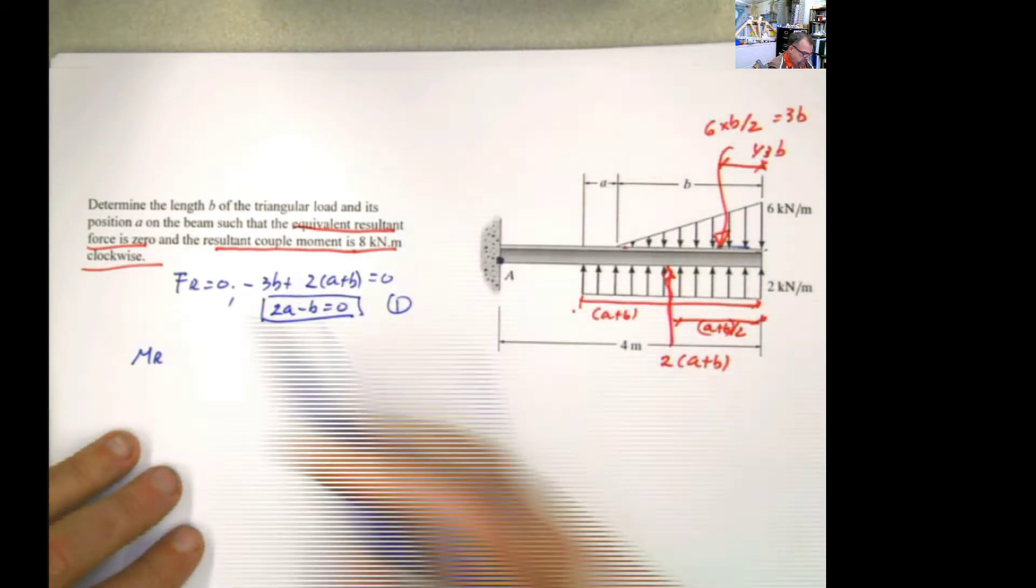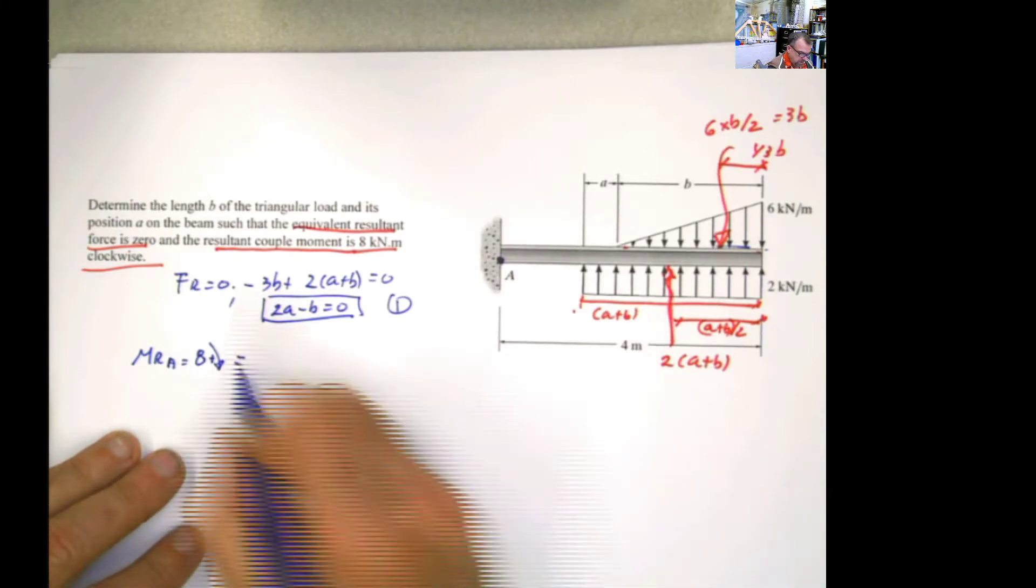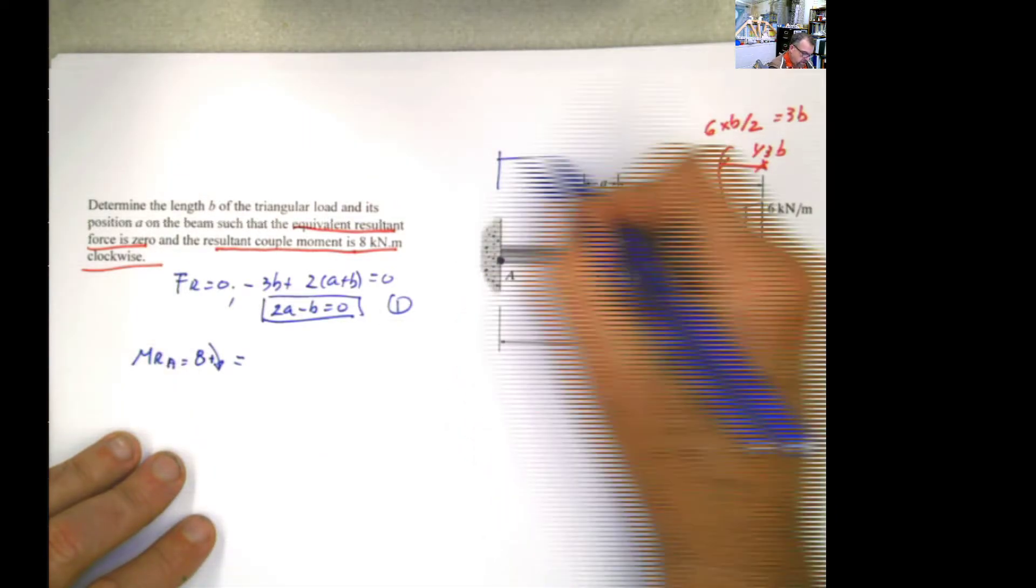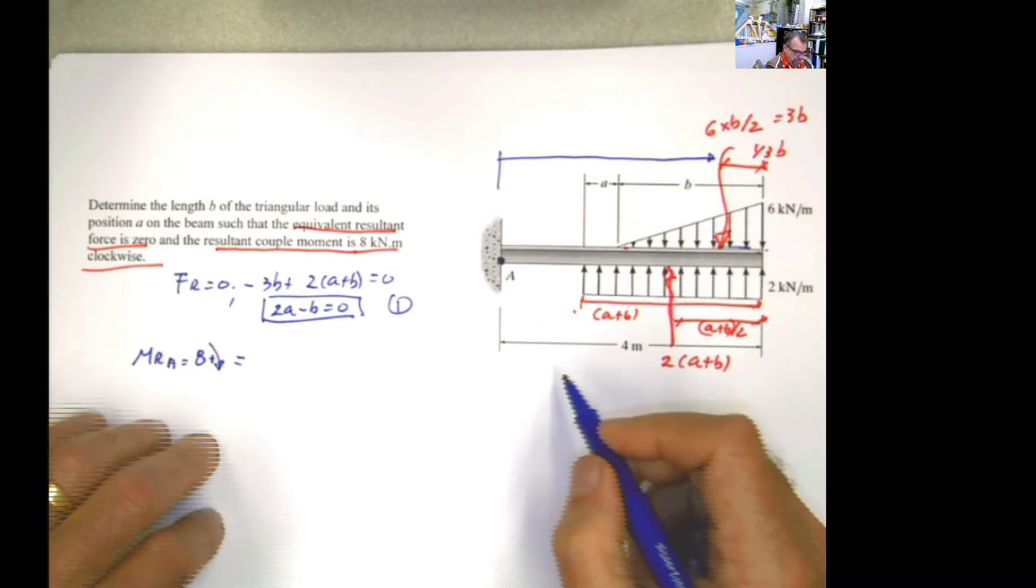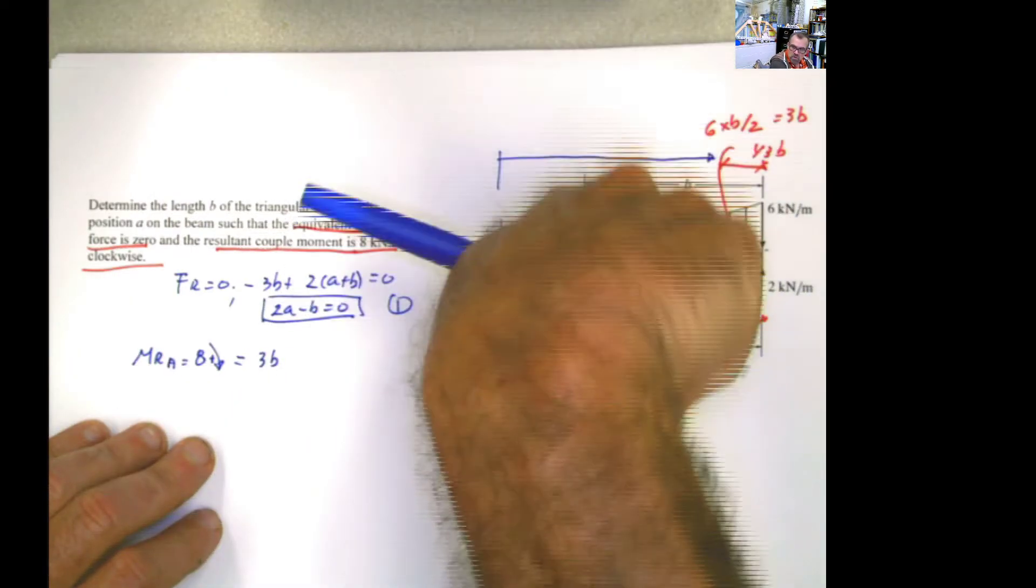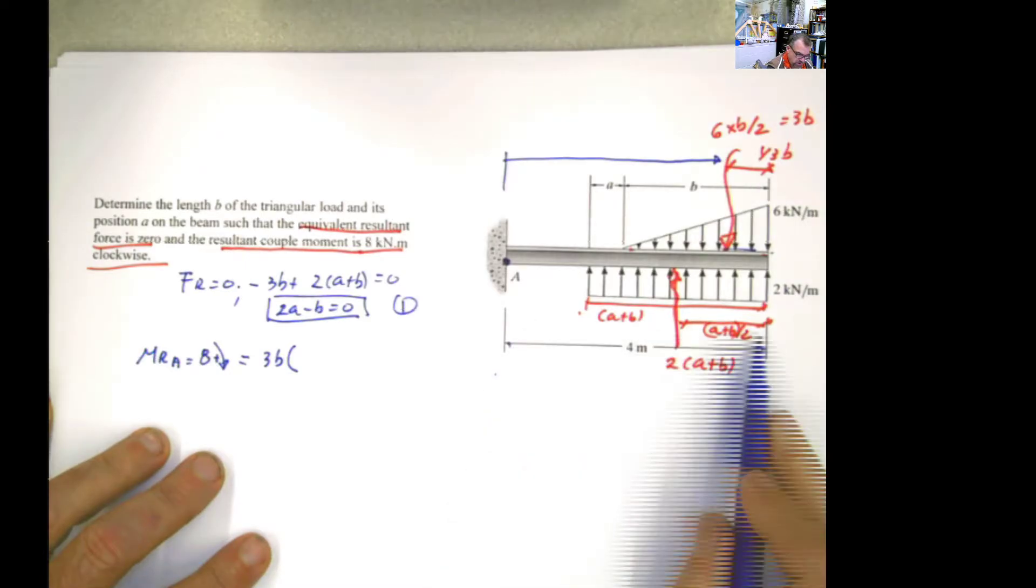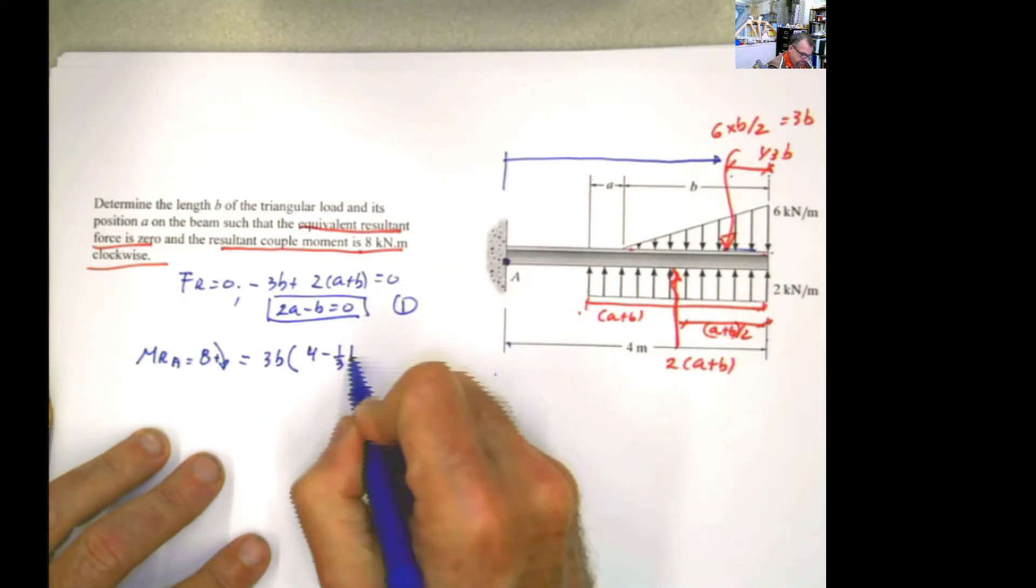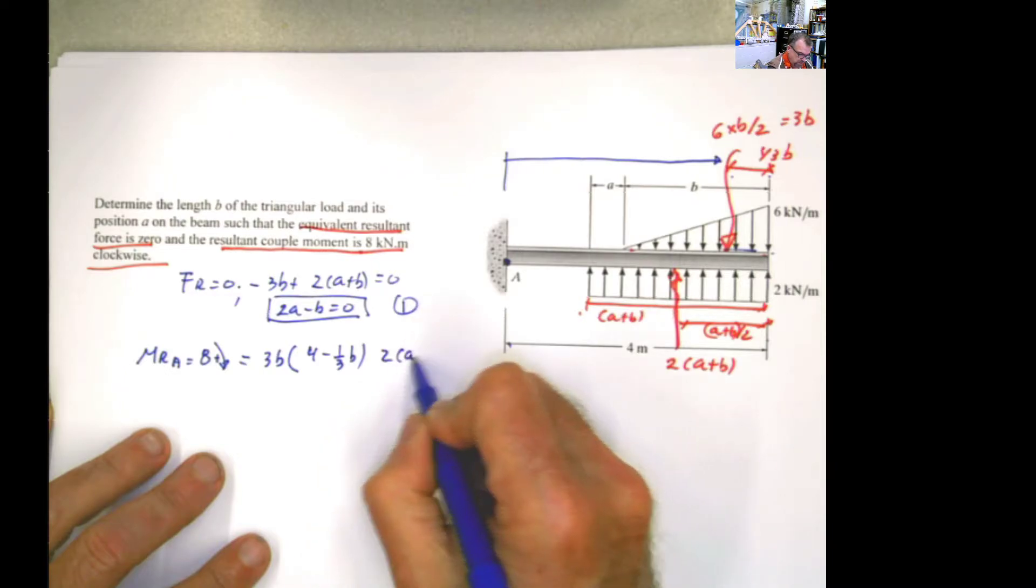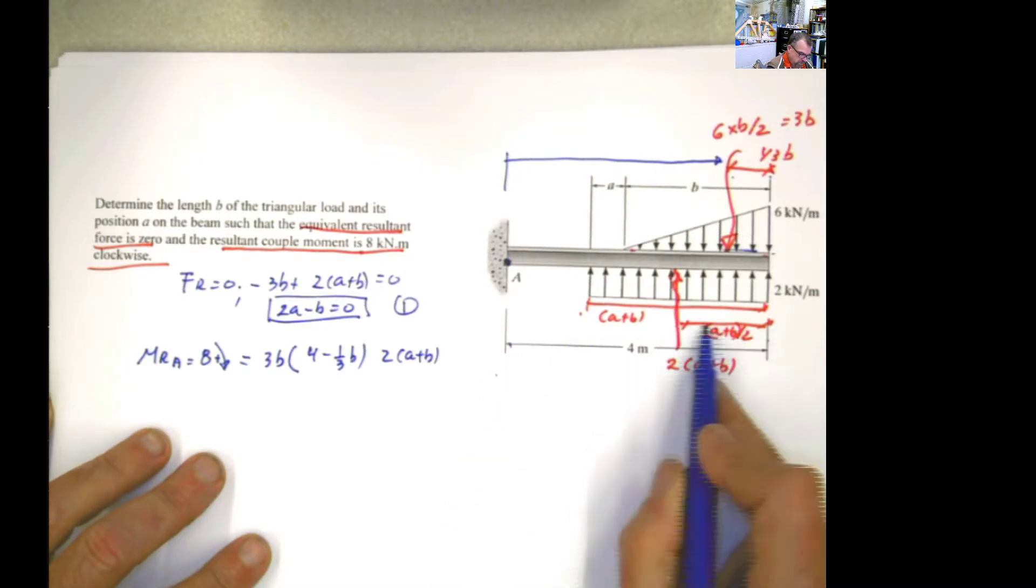So if you say the resultant moment with respect to A has to be equal to 8, because the problem is saying that, then we can do moment with respect to this point. And please do it. So I need the distance from here to there. The force is 3b and is causing a clockwise moment, because I can do that. Multiply by the distance. And this distance will be the total, which is 4 minus 1 third of b. And it's positive. Now, for this one, the value of the force is 2(a plus b).